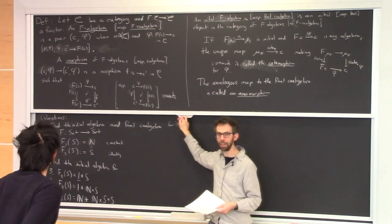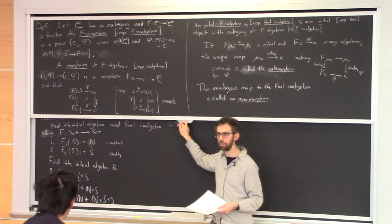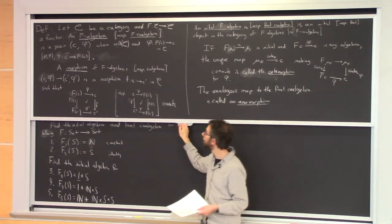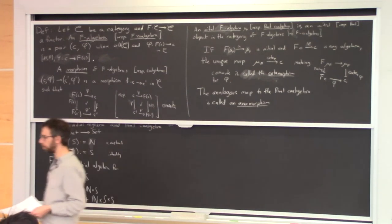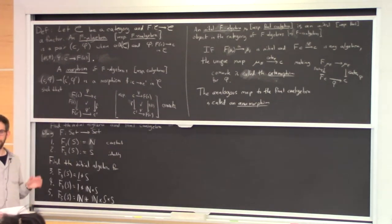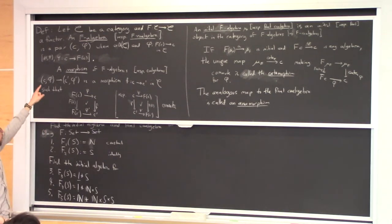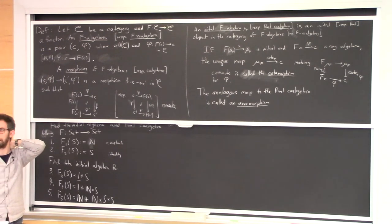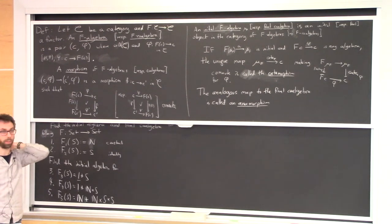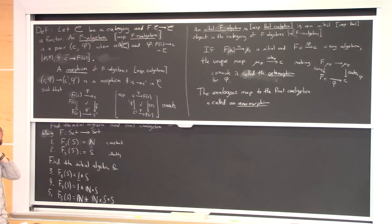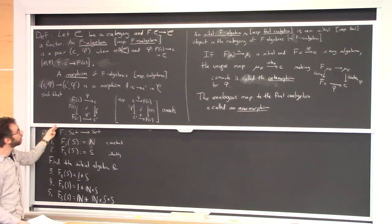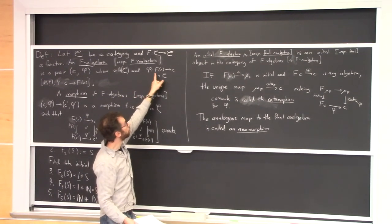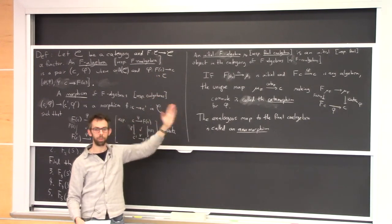Last time we defined algebras, morphisms of algebras, and initial algebras. An algebra is for an endofunctor like F from some category to itself, and you can ask whether that functor has an initial algebra. An algebra is a pair of an object in the category together with a map from F of that object to the object.